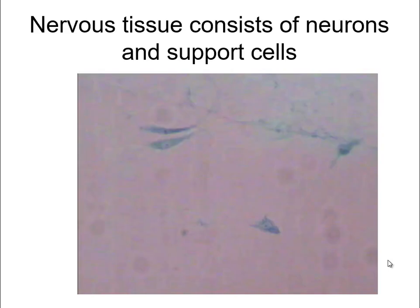When you're looking at cells it's very hard to see most of them because they're almost transparent and colorless. So we usually add a stain to make them more visible. Here you see some of the nerve cells with a little bit of staining. They generally tend to look like kites with tails.